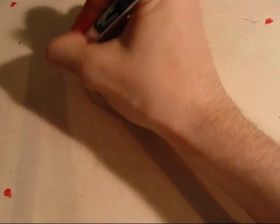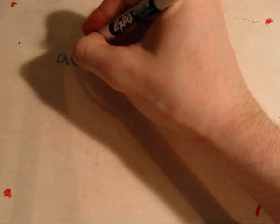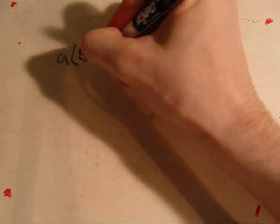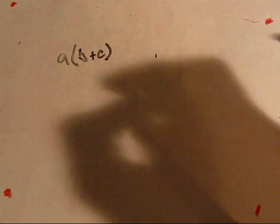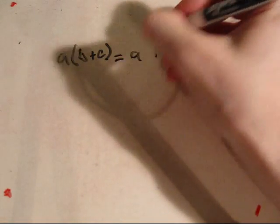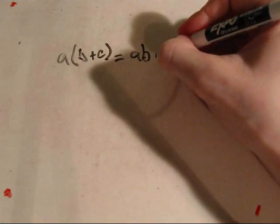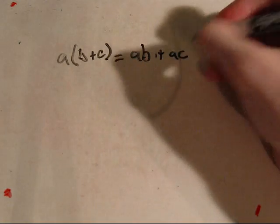Then you've got your distributive property, which says that a number a times the quantity of b plus c, for example, is equal to a times b plus a times c.